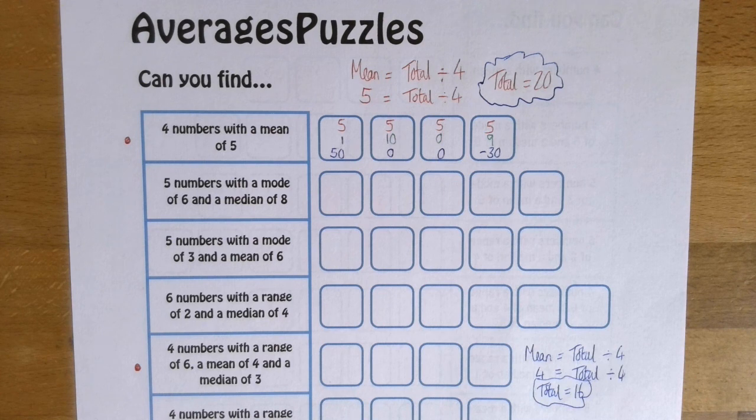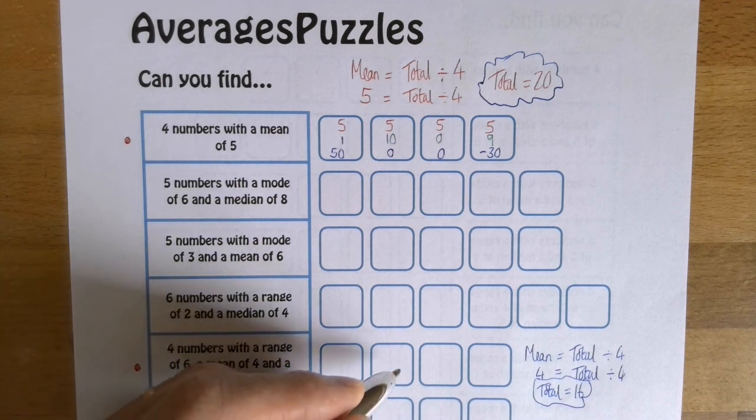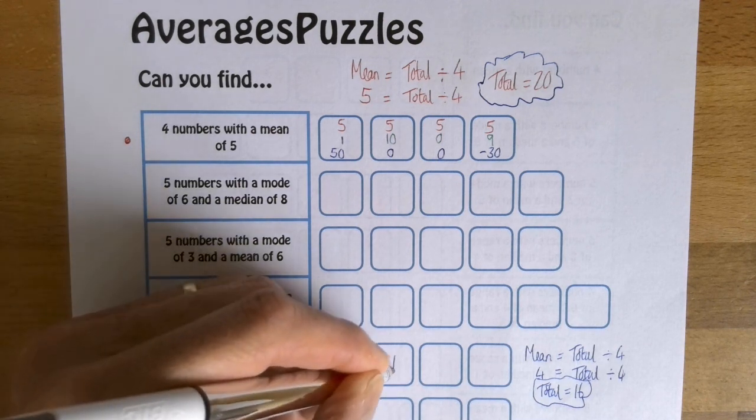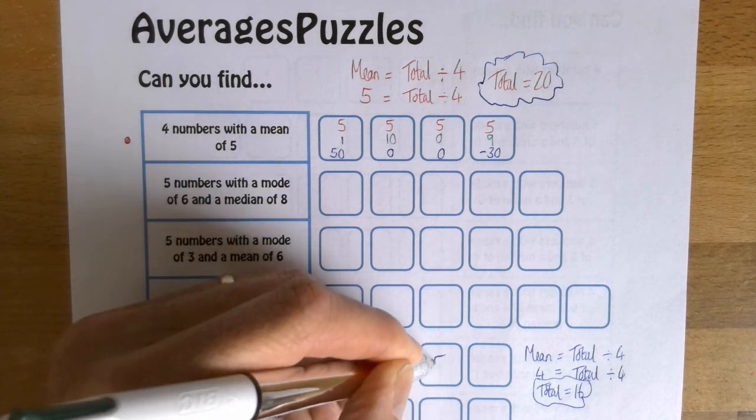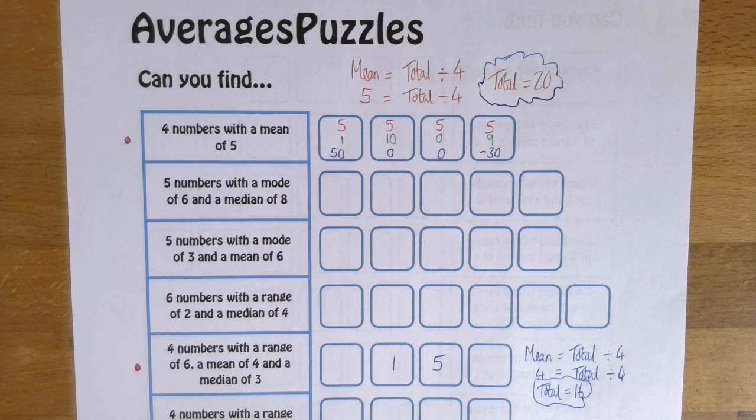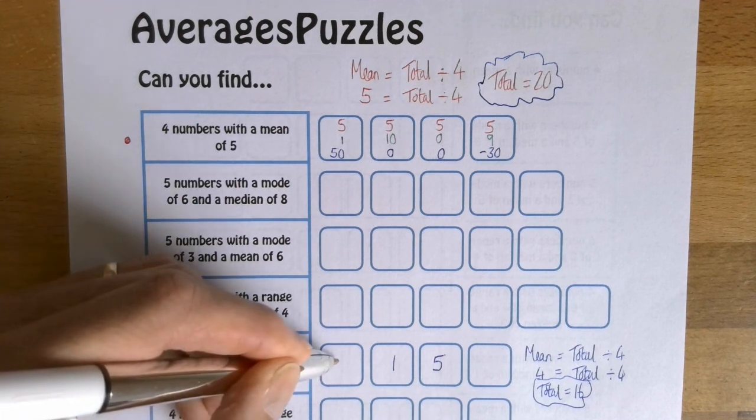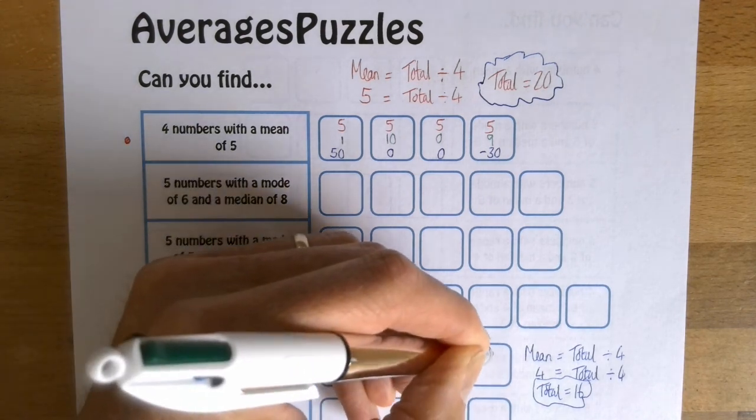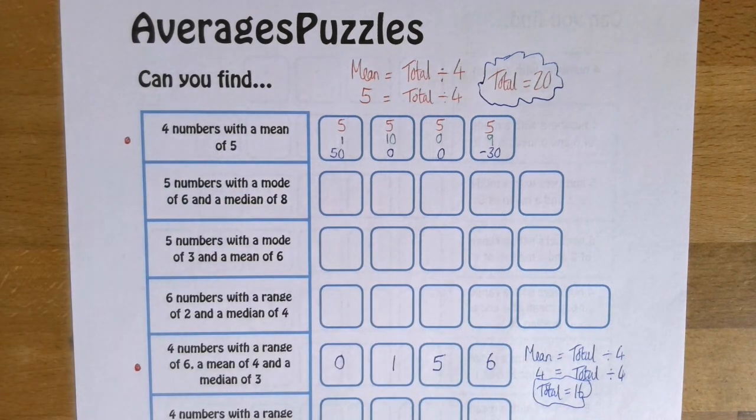So I'm going to try having here one and five. So three is halfway between one and five. So that's okay. The median is three. If I'm going to have a range of six, then I'm going to have zero there and six there. Now let's see if that works. Zero plus one plus five plus six doesn't make 16. That's a shame.